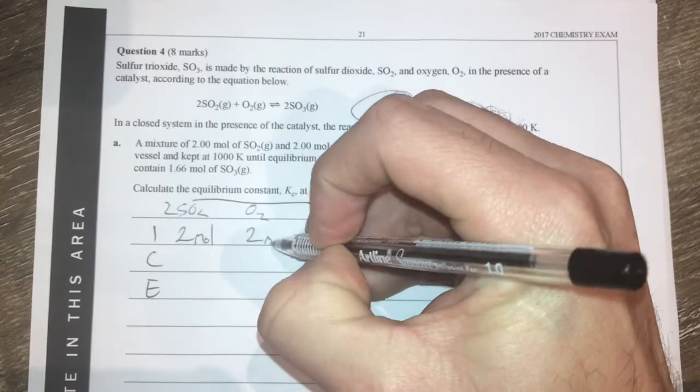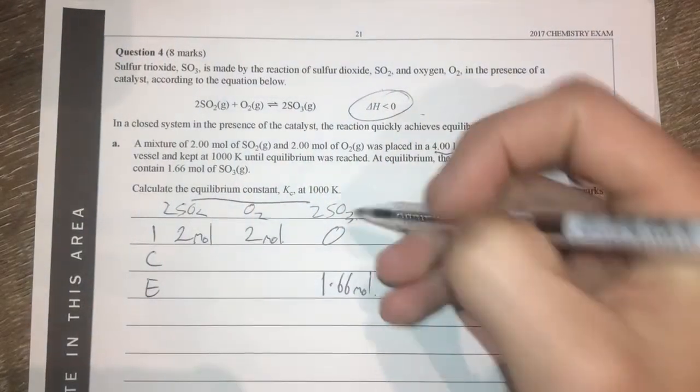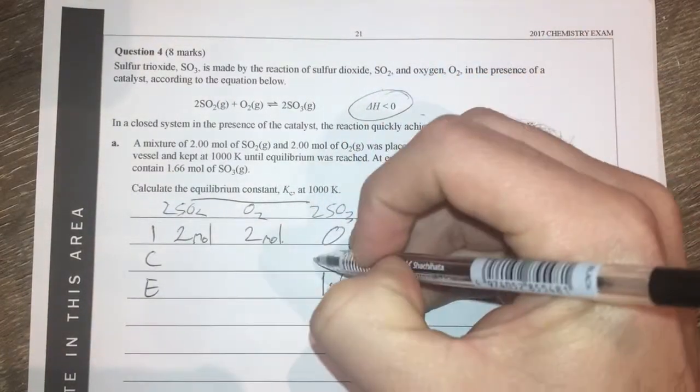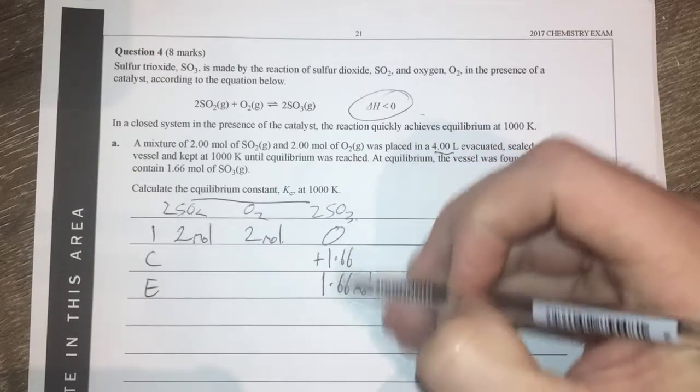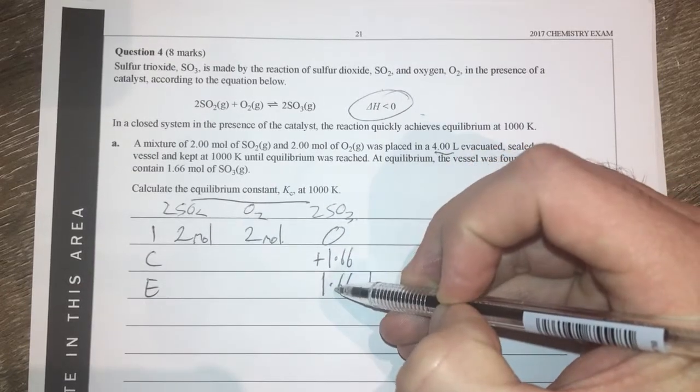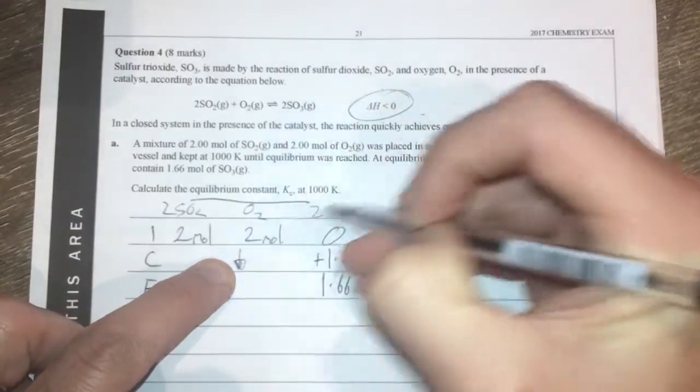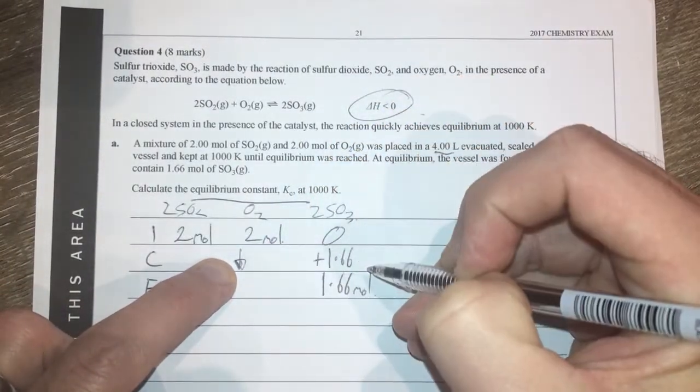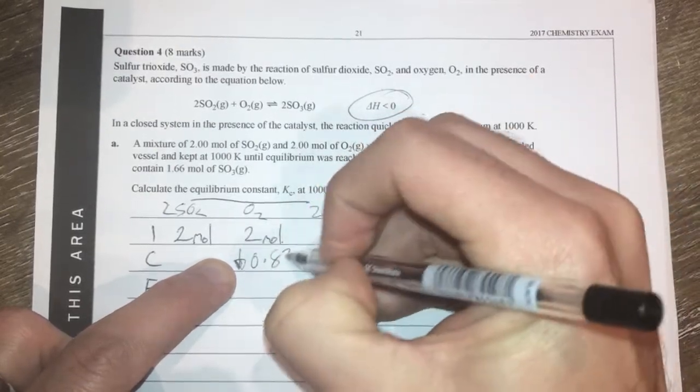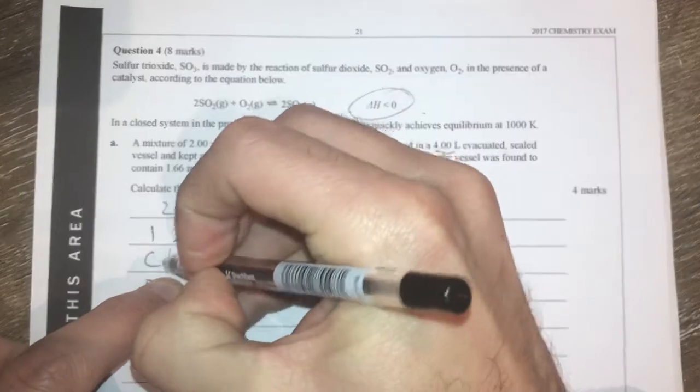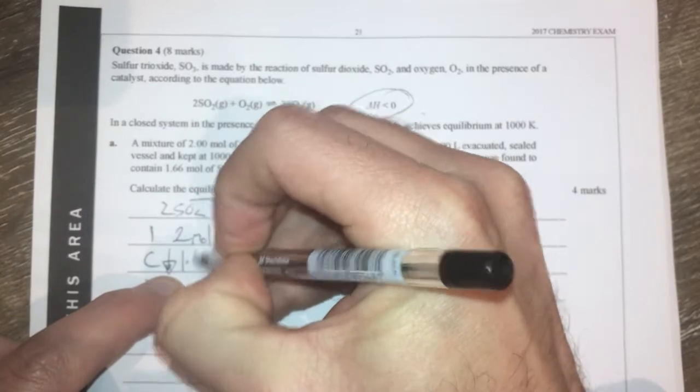Sometimes I like to mess with your head and give you both concentration and moles and you have to deal with that. But anyway moving on, 1.66 in this change area you can see it's increased by that. What does that mean? That means this has gone down by in ratio half this amount so it's gone down by 0.83 and this one has gone down by the ratio is two to two so therefore it's the same amount 1.66.